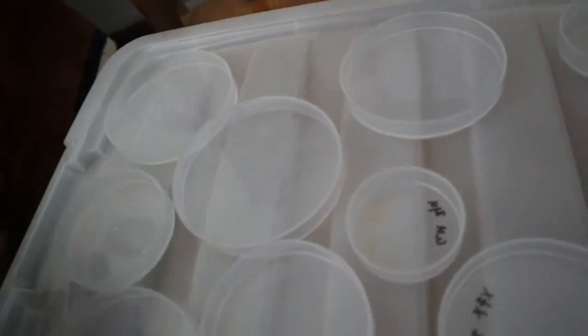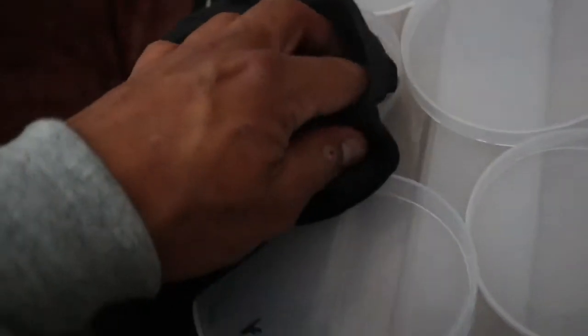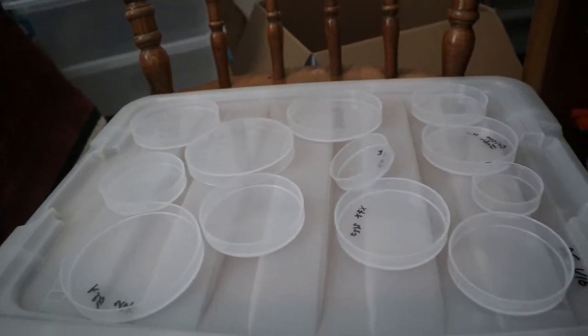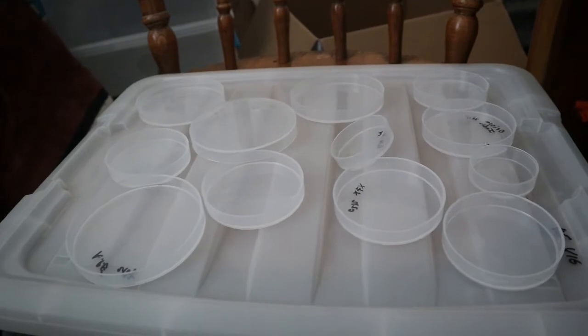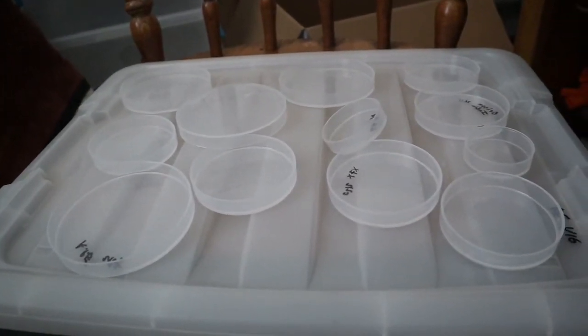There you go. So basically you want to get all your jars and then wipe them down with alcohol or clean them off. And then from there, we'll just get some tin foil and we'll wrap them up, throw them in the pressure cooker, sterilize them with your agar, your grains, whatever it may be that you're pressure sterilizing.